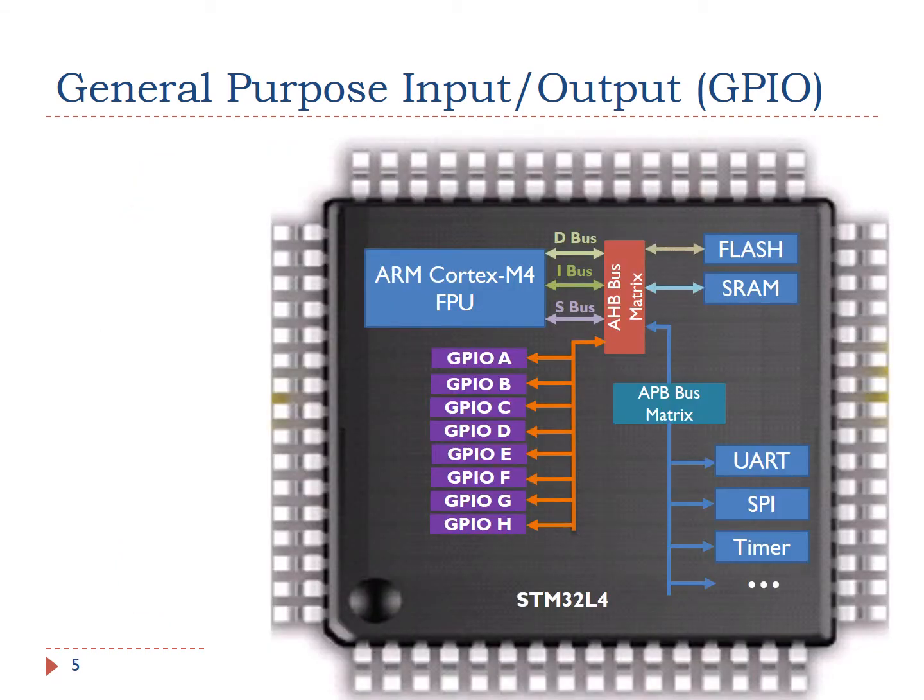The ARM Cortex M4 processor core is connected to the other components via three buses, including the data bus, the instruction bus, and the system bus. These buses are connected to the advanced high-performance bus matrix. AHB is the backbone bus. It is used for high-performance, high-clock frequency system modules, such as on-chip flash, on-chip SRAM, as well as GPIO modules.